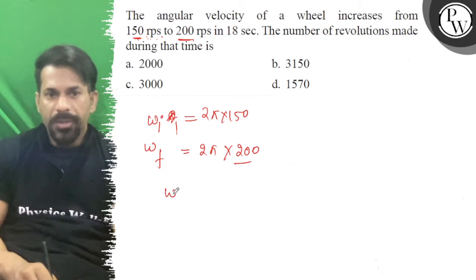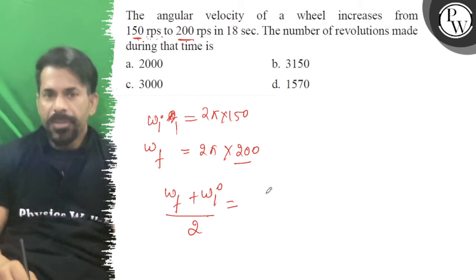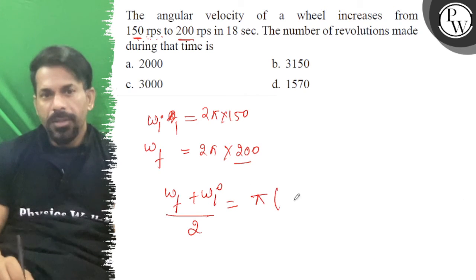So omega final plus omega initial by 2, that will give us the average. So this will be π into 350.